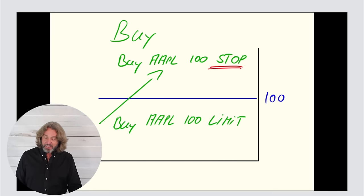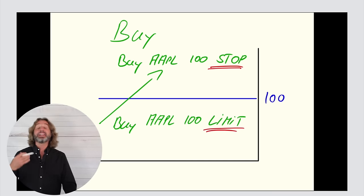On the other hand, if you're specifying a limit order of 100, meaning that you only want to pay a maximum of 100, and the next day Apple opens at 110, you would not get filled because you specify that you only want to buy if you are below 100. Is this making sense thus far?